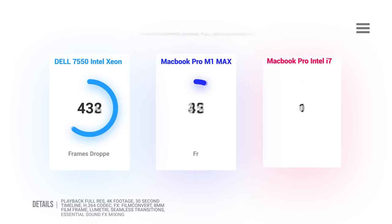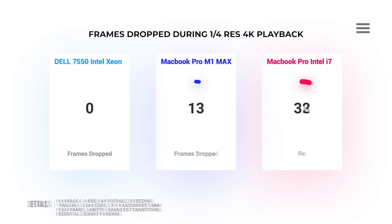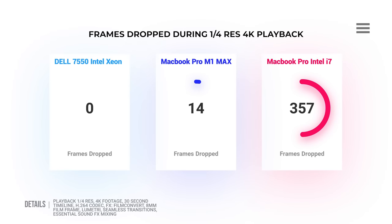The MacBook Pro 2017 had 485 frames dropped out of 721. The M1 Max had 481 dropped, which is surprisingly similar. The Dell had just 467. Now let's lower the playback resolution to a quarter. At quarter resolution, the 2017 had 357 frames dropped, the M1 Max had just 14 frames dropped, and the Dell had zero. Now let's move on to render speed — actually rendering out all of the effects — to see how long it takes on each computer.